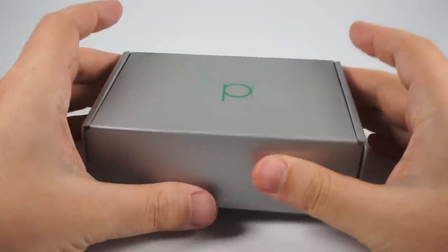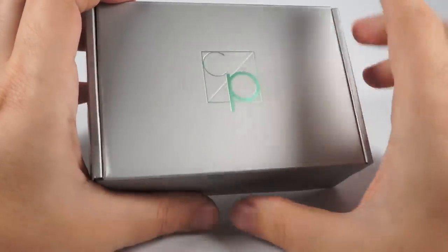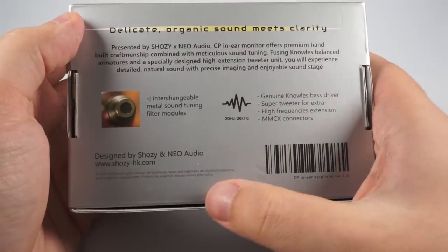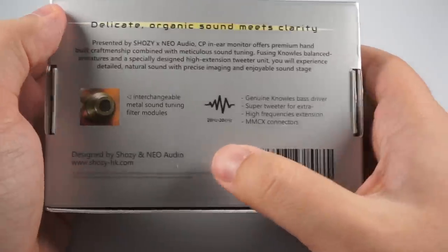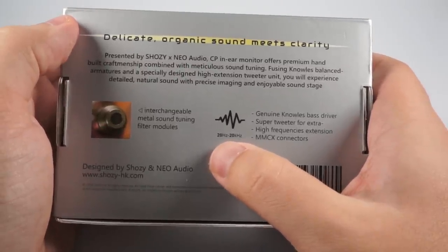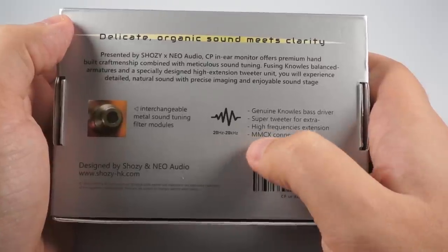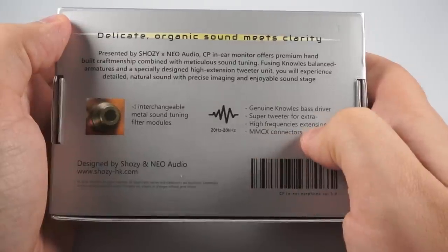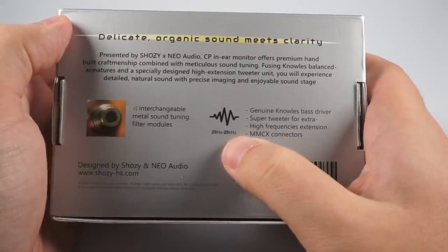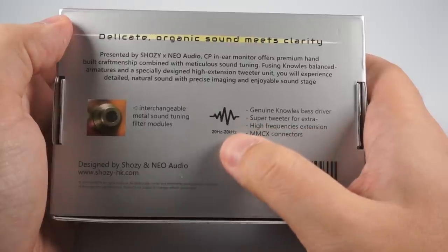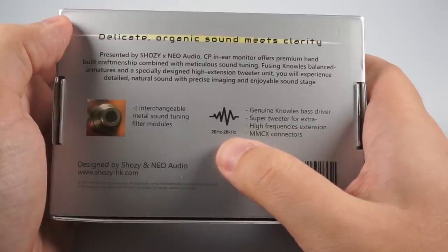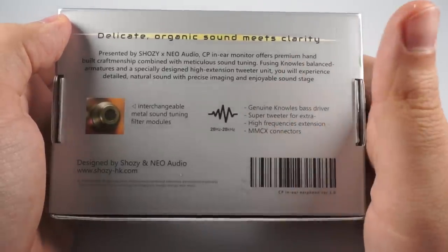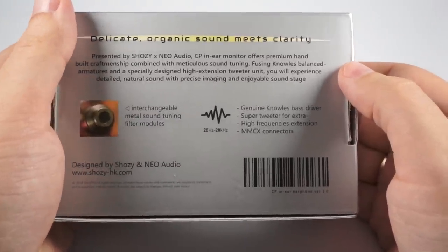The box is fairly simple, made of gray cardboard with a simple logo printed on it. On the back side they've highlighted some features of this model. The only technical specification printed here is frequency response from 20 Hz to 20 kHz. At the same time, they're mentioning a super tweeter for extra high frequencies extension. I'm not sure if they mean from 10 kHz where almost all in-ear monitors have drop-off, or if they're speaking about above 20 kHz. But treble is good, and we'll talk about that later.